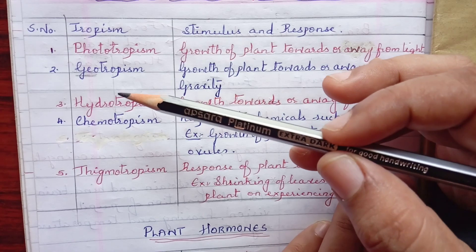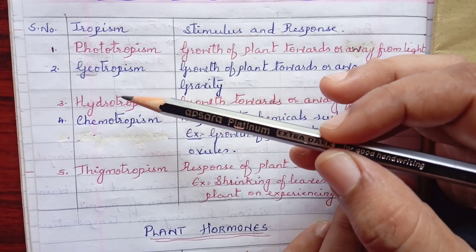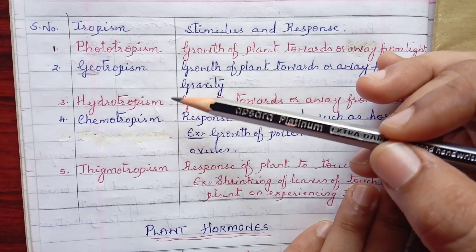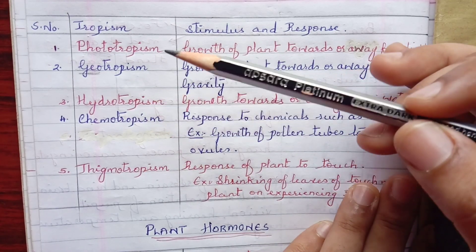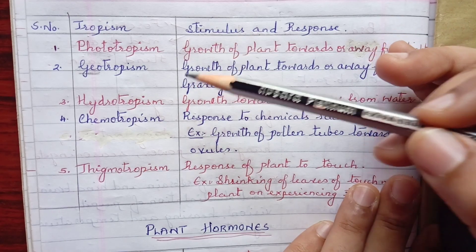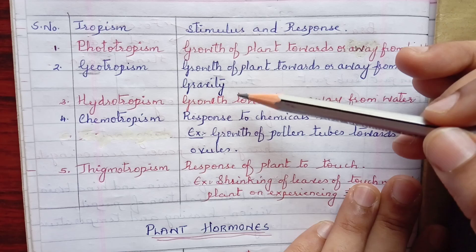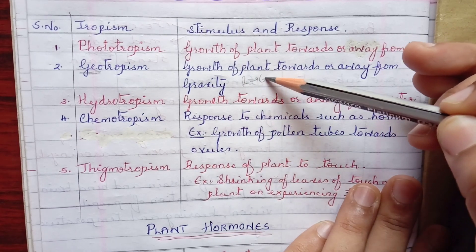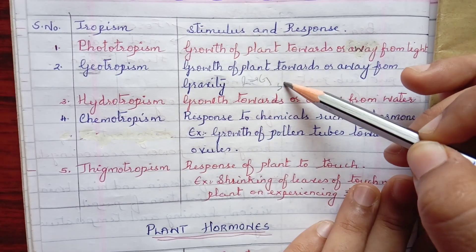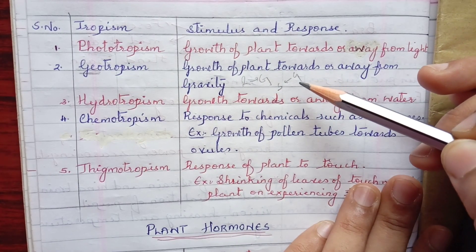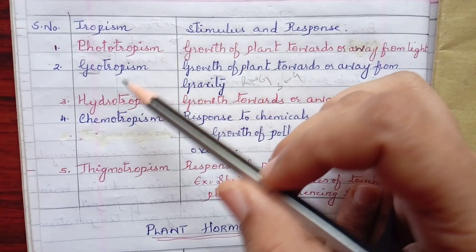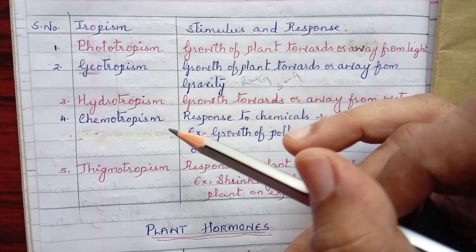Next, geotropism. 'Geo' means earth, so we are referring to the gravity of the earth. Either the plant is growing towards gravity or away from it. Roots grow towards gravity — downwards — whereas shoots grow away from gravity, moving in the opposite direction.